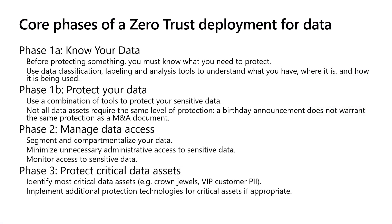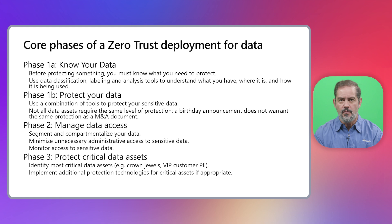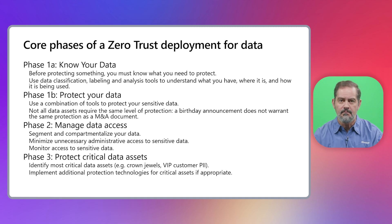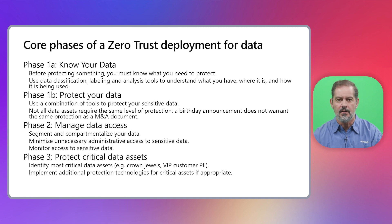During phase three, you're going to identify particularly sensitive data assets such as the organization's intellectual property — the company's crown jewels — or VIP customer PII that deserves special focus. For these assets, you may implement additional restrictions or even new technologies such as hold your own key, which makes data entirely opaque to the cloud and anything outside your organization even if it's an authorized service.